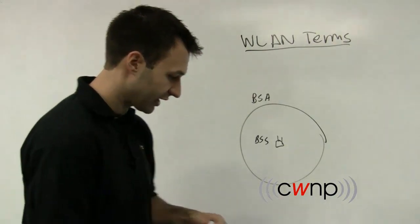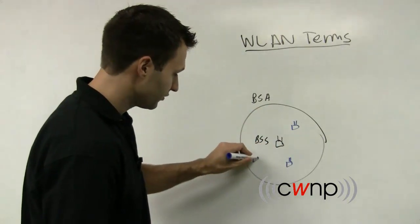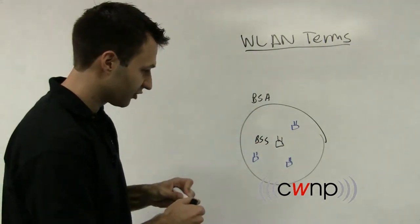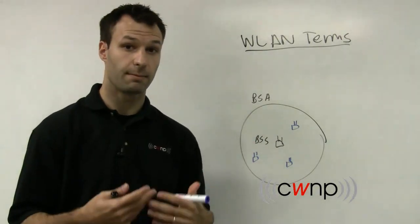So when you have multiple clients, we'll put the clients up here in blue, that are connected to this access point. That access point and those blue clients are all part of the, we'll just call it the blue basic service set.